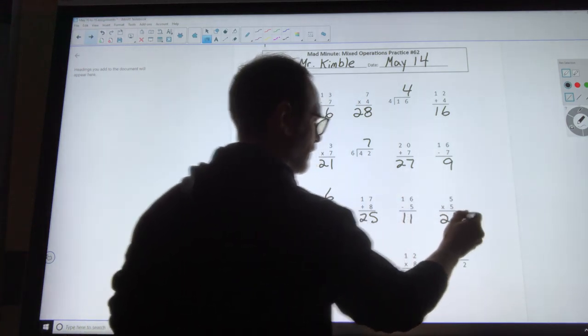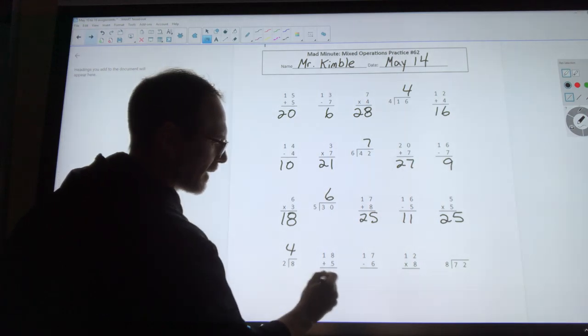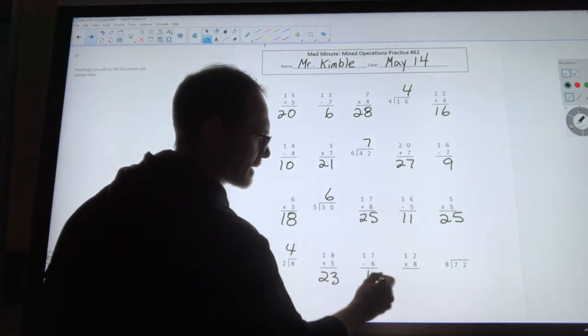16 minus 5 is 11. 5 times 5 is 25. 8 divided by 2 is 4. 18 plus 5 is 23. 17 minus 6 is 11.